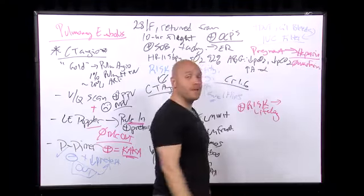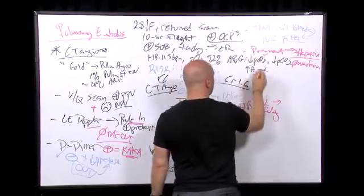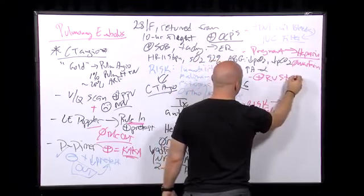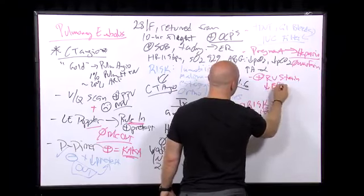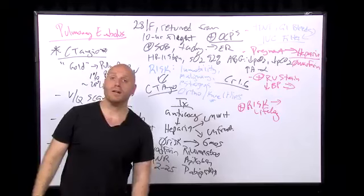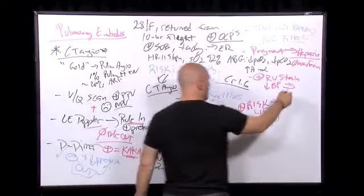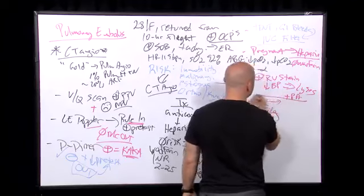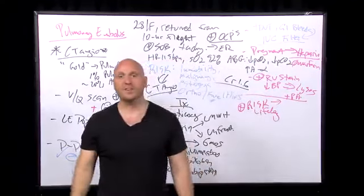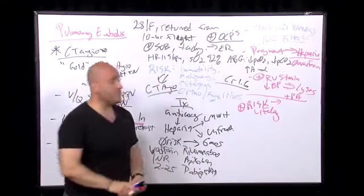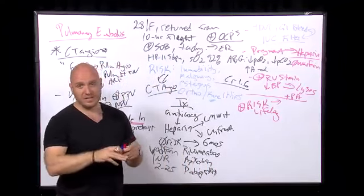What if she's showing signs of right ventricular strain and hypotension? What must you do? She's earned what? Thrombolysis. She's earned thrombolysis with TPA. Because this is a sign of imminent failure. And she's going to die.